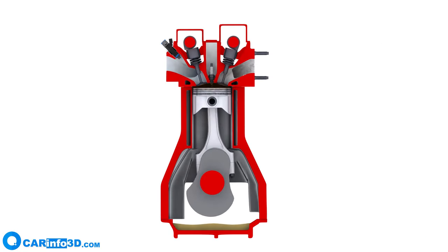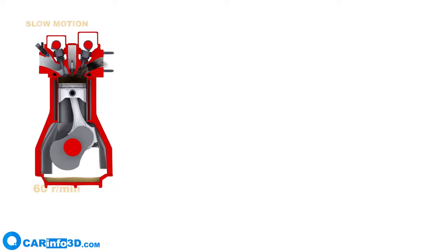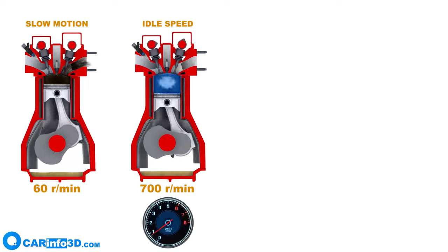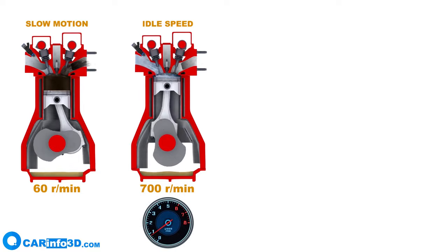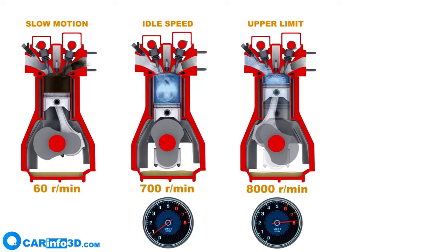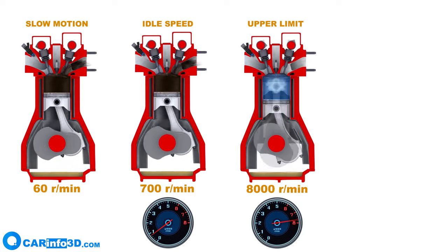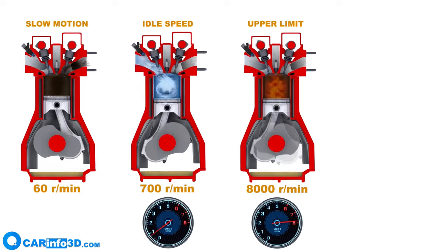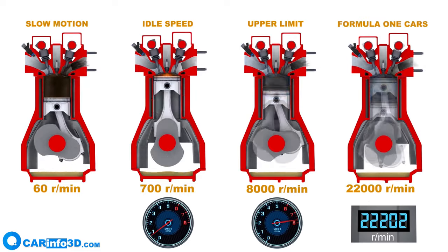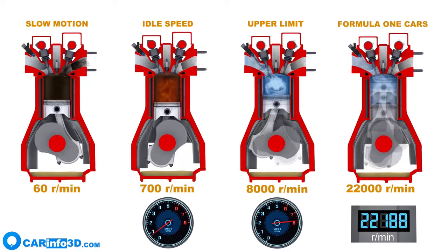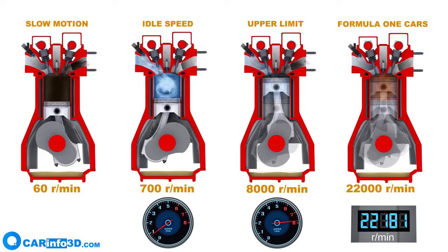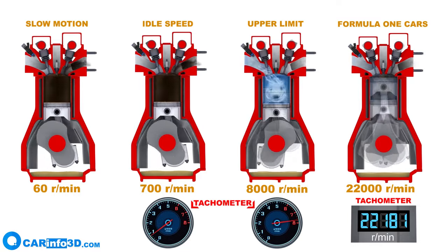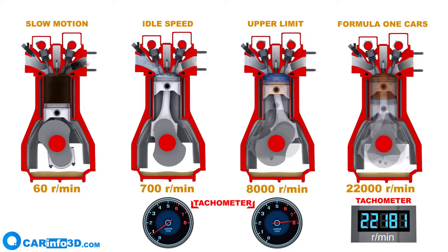Please keep in mind that we are watching the engine in slow motion. In fact, the crankshaft turns an average of 700 revolutions per minute at idle speed. The upper limit on production cars reaches 8,000 RPM, and engine speeds in Formula One cars can get as high as 22,000 RPM. You can check the RPM value on an instrument called a tachometer on your car's dashboard.